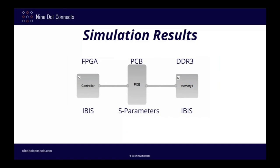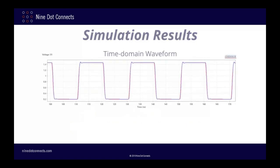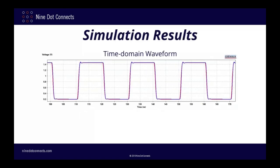Each of these blocks has a mathematical model associated with it. The PCB block has the S-parameters we generated from PowerSI. The active components utilize a model known as IBIS — Input Output Buffer Information Specification — which is essentially a mathematical model of how just the IO pins themselves operate. Once I've entered these models into SystemSI and set up simulation parameters such as the clock rate, I'm able to generate time domain waveforms. For this first simulation I'm using a rather unrealistically slow clock rate in order to focus on the signal transitions. The red waveform is the voltage at the FPGA driver pin and the blue waveform is the voltage at the DDR3 memory pin — there is almost no ringing, and the edges are about as sharp at the memory chip as they are at the FPGA.